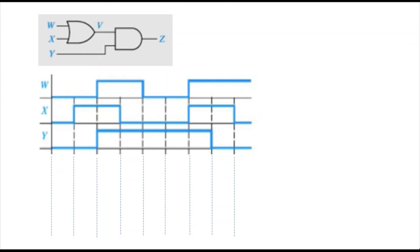Welcome to my channel. Today's question involves a circuit where we need to find the timing diagram for V and Z. The inputs are w, x, and y. In this question we have two logic gates: the first one is the OR gate and the second one is the AND gate.